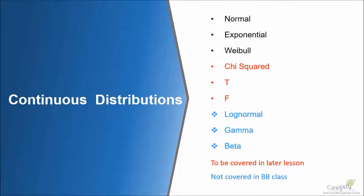For example, normal, exponential, and Weibull — these three are widely followed distributions. All of these occur in nature.